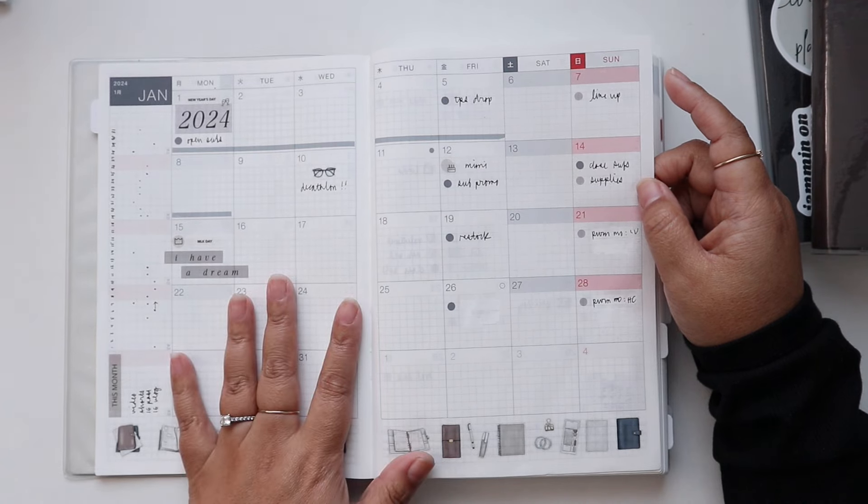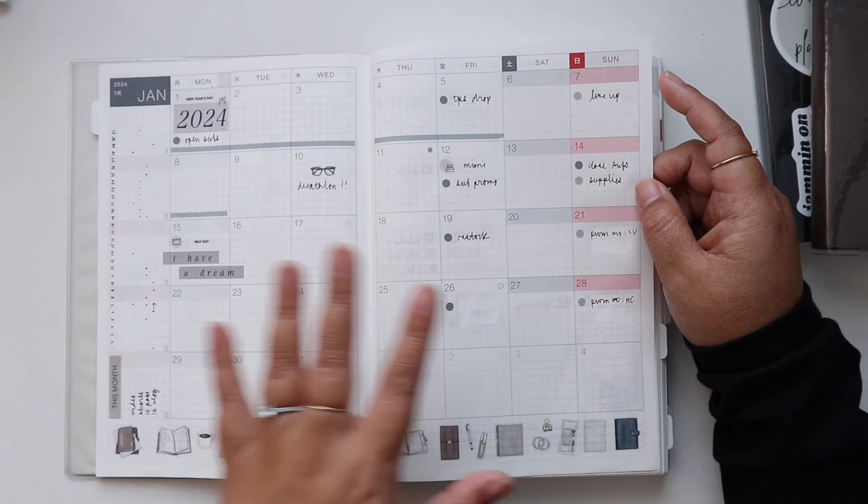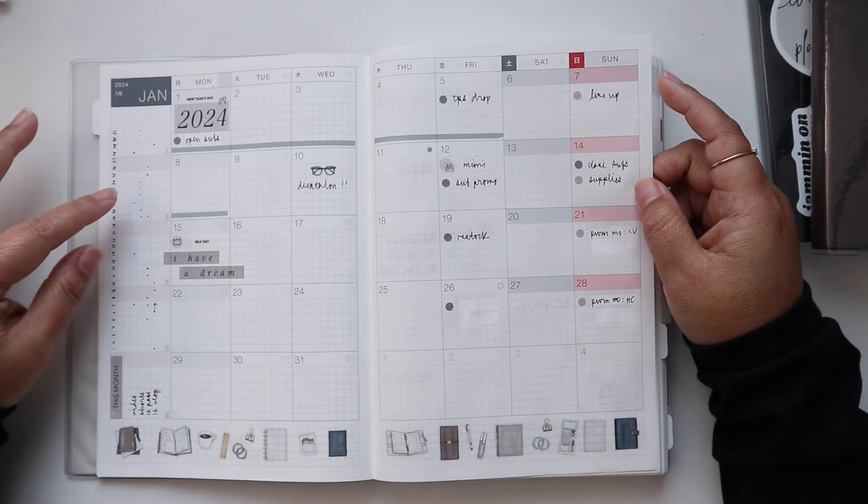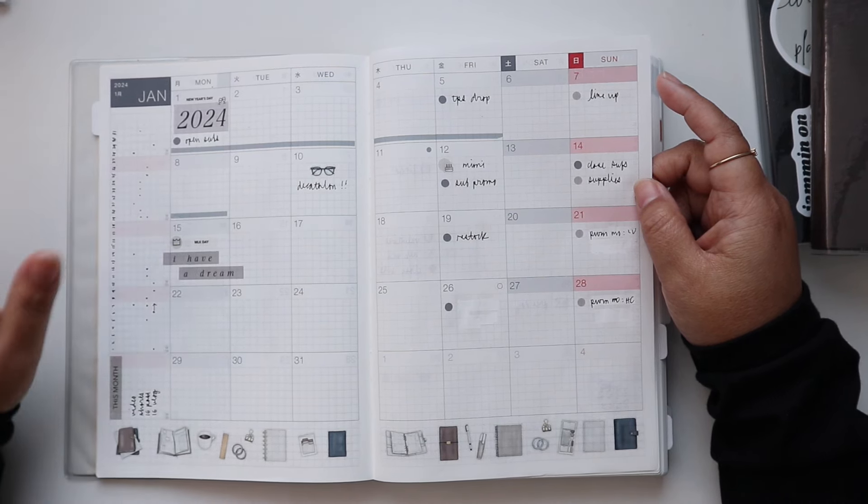This section pretty much stays the same throughout the month. It's just for reference but then every day I go in and mark off what I've been posting on social media and YouTube and stuff. So that's my month and I have February all set up.